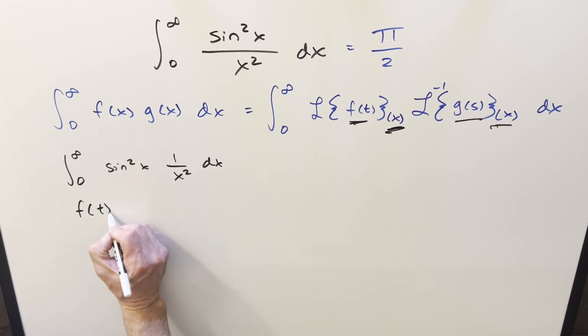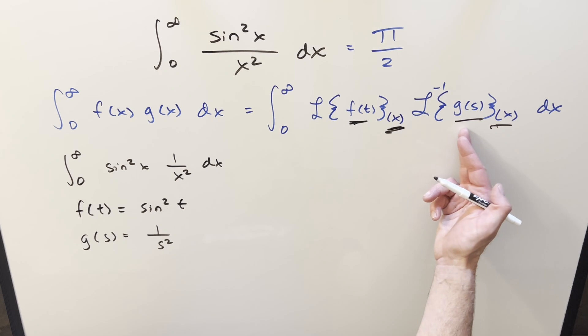And so I'm going to call my f of t equal to sine squared t. And then for the g, we'll call this g of s. And we'll do it as 1 over s squared, because that's going to be easy to get an inverse Laplace transform.